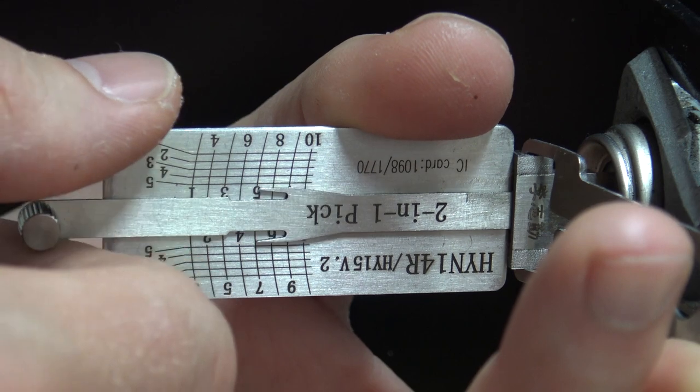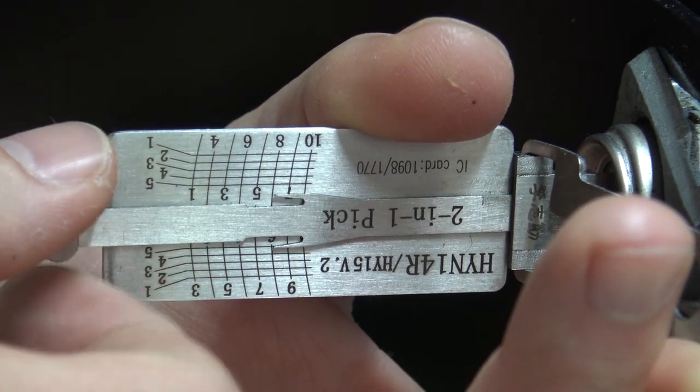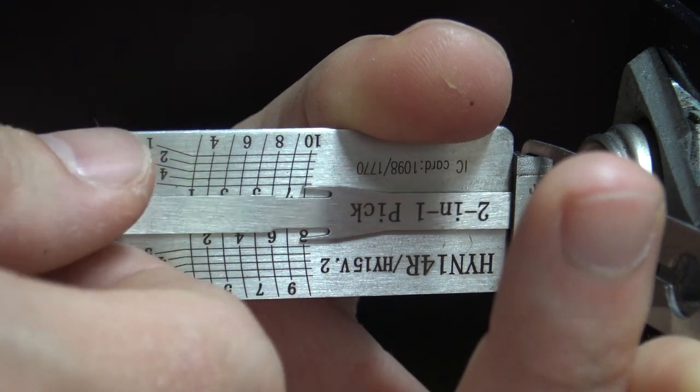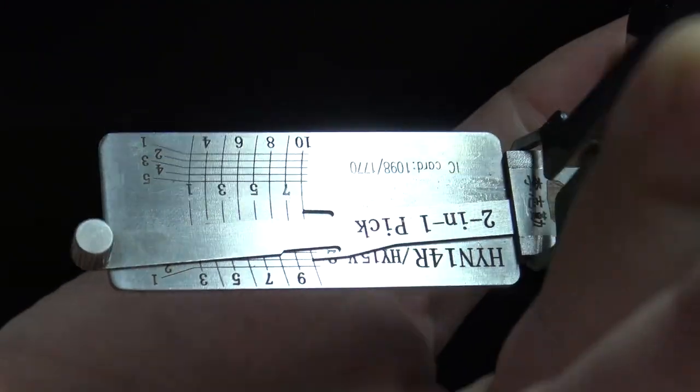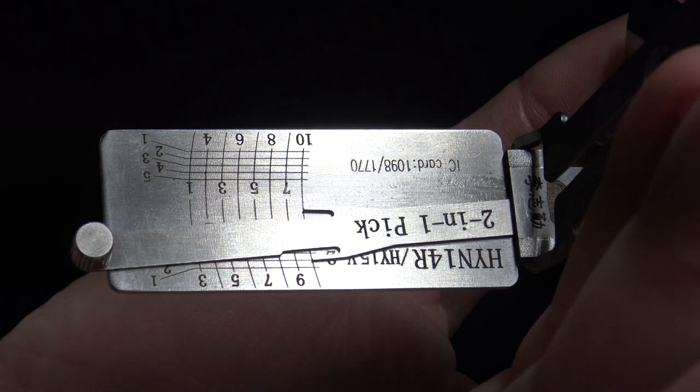a five cut that doesn't require picking. Same with that one. Nine here, click on nine, click on ten, and we are open. So those are going to be five cuts that you don't need to actually pick. As far as decoding goes here...